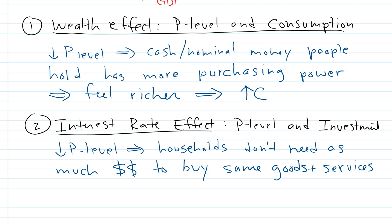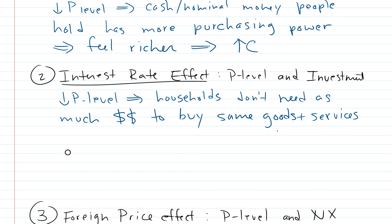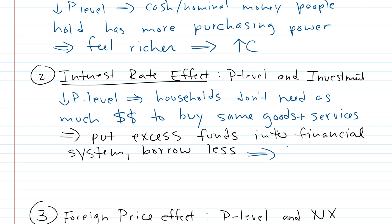So instead they're going to save money. Since these households don't need as much money to buy the same goods and services, they're going to save money and put excess funds into the financial system. They also borrow less because they don't need to borrow to buy stuff as much because the price has fallen and the purchasing power has risen. This is going to cause the interest rate to fall.